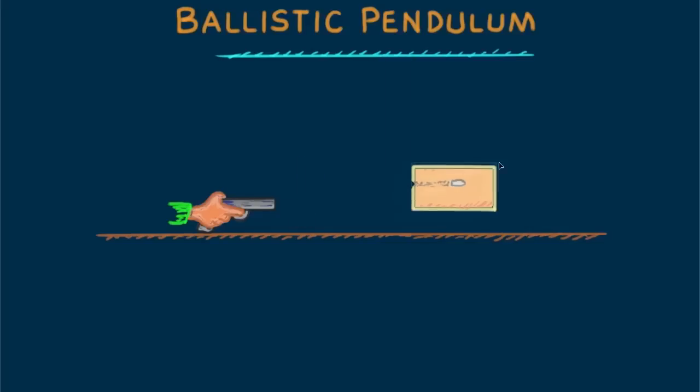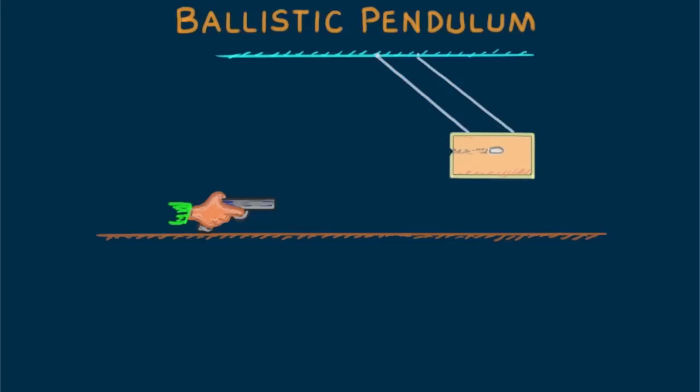The block is large enough to completely swallow the bullet whereupon it swings by supporting strings upward. The faster the bullet, the higher the block will swing to an elevation h that is easily measured.